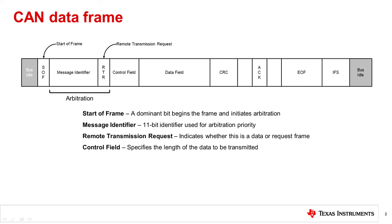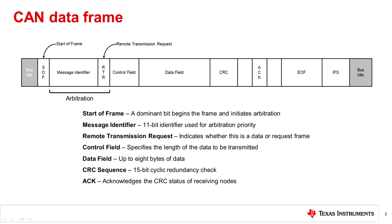The control field specifies the length of data to be transmitted in this message. For data frames, the data is transmitted immediately following the control field. Once the data is sent, a cyclic redundancy check sequence is transmitted that is used to check for errors in transmission. Once the CRC is sent, the driver remains recessive, and the receiver can transmit a dominant bit called the ACK, or acknowledge bit, to indicate successful message reception. The ACK bit is bounded by a delimiter bit on each side. Once the receiver has acknowledged transmission, the driver sends a 7-bit end-of-frame message, followed by a 7-bit inter-frame spacing, which is the minimum time before another frame can be transmitted.